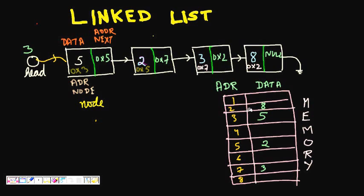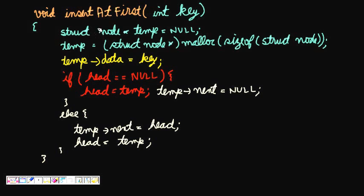To traverse the linked list you also need the first memory location — that is, where the linked list starts. This is stored in a pointer called head. Head initially stores 0x3, so we go directly to memory location 3 where we find the data and the next address pointing to the second node.